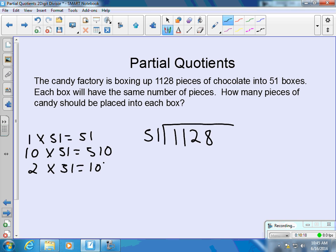20 groups of 51 would be 1,020. 5 groups of 51 would be 255. The way you can think about that is half of the 510. So it looks like we have enough information that we can start using our cluster problems to find out how many pieces of candy should be placed in each box.